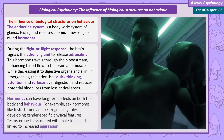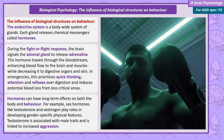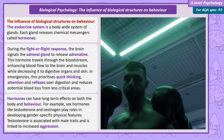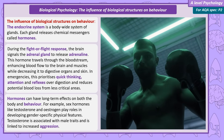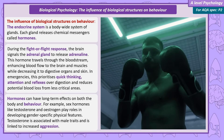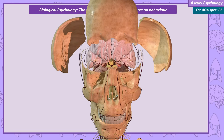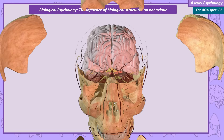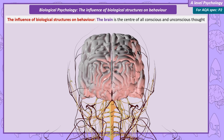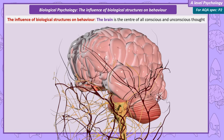Hormones can also have long-term effects on the body and behaviour, such as sex hormones like testosterone and oestrogen. Testosterone is linked to sexually dimorphic male body features, as well as to increased aggression. Of course the most important biological structure for psychologists is the brain — the centre of all conscious and unconscious thought. The brain is connected to the body by the brain stem.